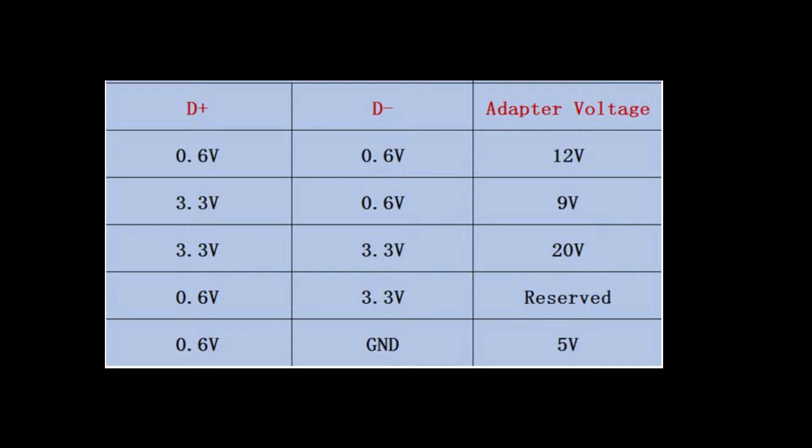This table represents different voltages to feed in the data wires in order to get different voltages from the adapter. 0.6V in both wires represents 12V condition, 3.3V and 0.6V represents 9V and so on.